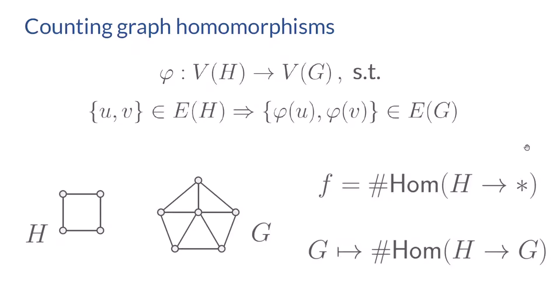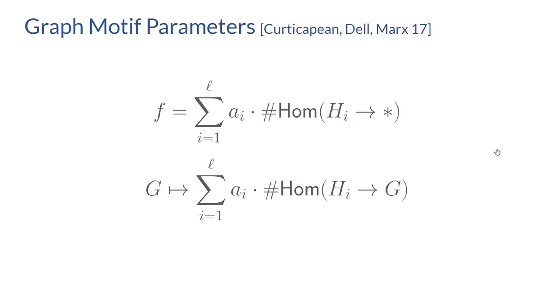It will be very convenient to use the following notation. Fixing a graph H, the function #Hom(H→*) is the function that expects as input a graph G and outputs the number of homomorphisms from H to G. Using that notation, I can define a so-called graph motif parameter, a notion due to Curticapean, Dell, and Marx from 2017. A graph motif parameter is a formal linear combination of homomorphism counts — a function F equals a linear combination where the coefficients A_i and graphs H_i are fixed and only G is the input.